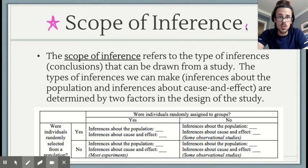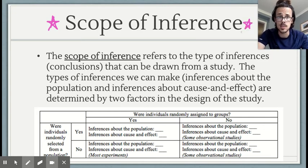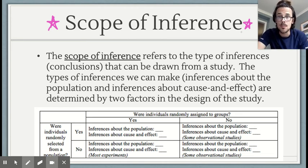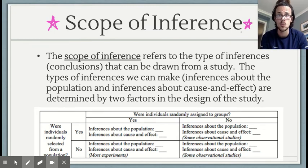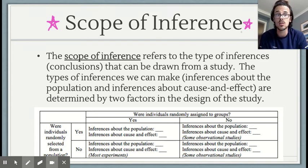Scope of inference is one of those things that after you leave my class and go on to be an adult, hopefully you will remember, because it really matters in terms of what you can do with results from a study. The average adult doesn't understand it well enough, and journalists writing articles frequently mess this topic up and misapply the scope of inference of a study.